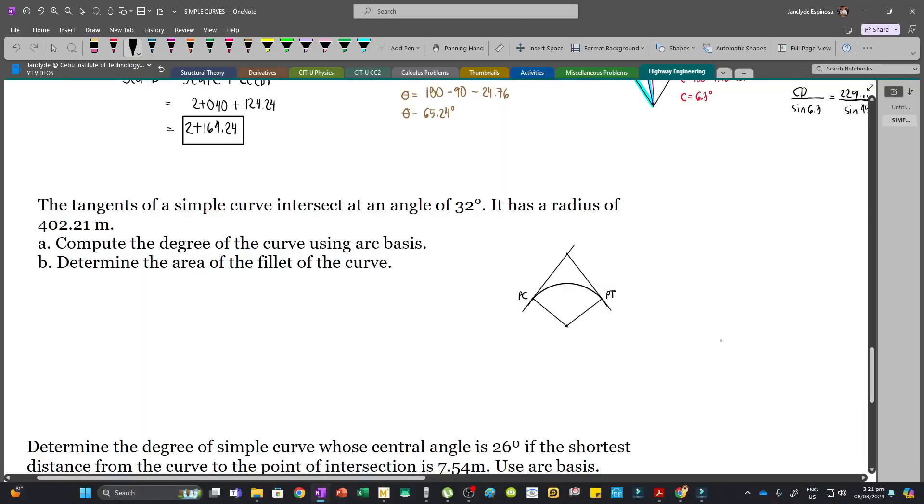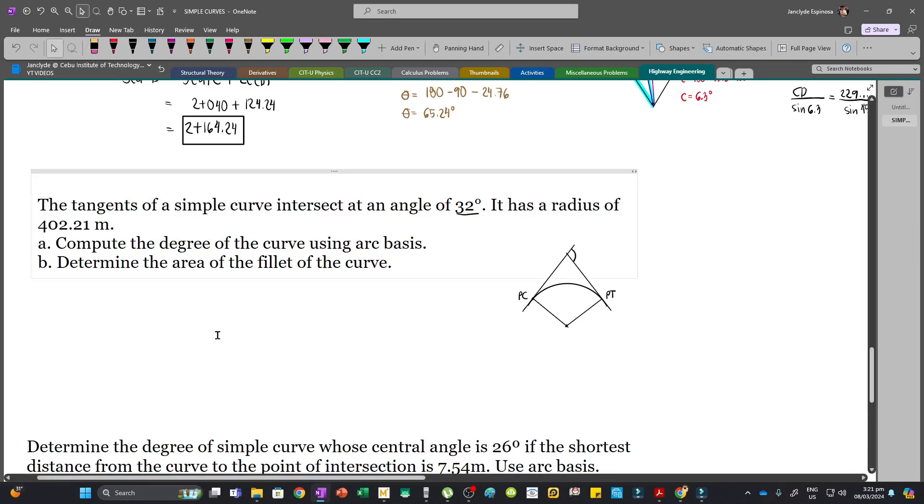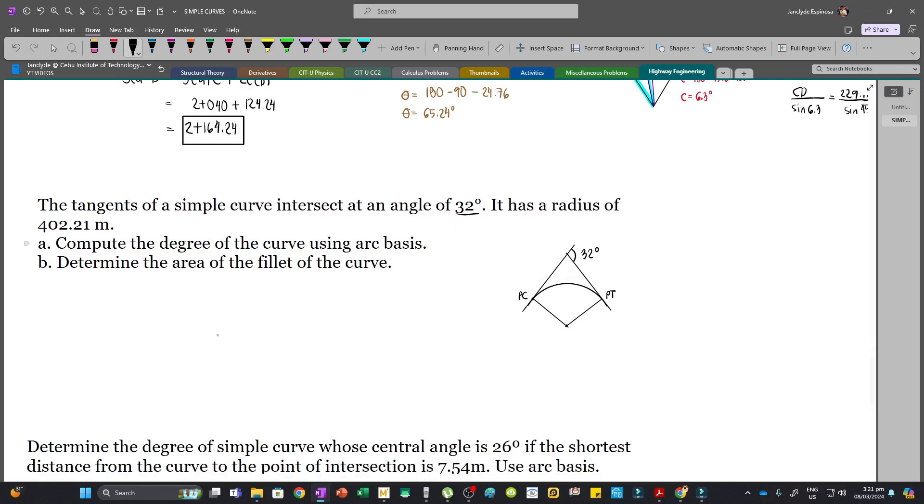And so now let's solve more sample problems. The tangents of a simple curve intersect at an angle of 32 degrees. So this is the angle of intersection which is 32 degrees, and then the radius of the curve is 402.21. So r equals 402.21.